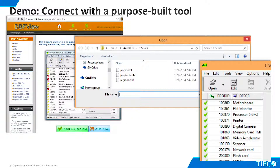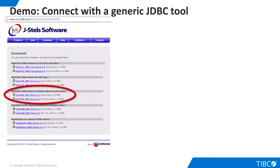Next, let's find a JDBC driver and connect to our data source with a generic SQL tool. This is a great way to help us tell the difference between general connectivity issues and TDV-specific issues. We were able to locate an XBase JDBC driver from JSTELS. The free version is limited to returning up to 1,000 rows. That's fine for our demo, but if we needed it for production purposes, we would have to purchase a license.